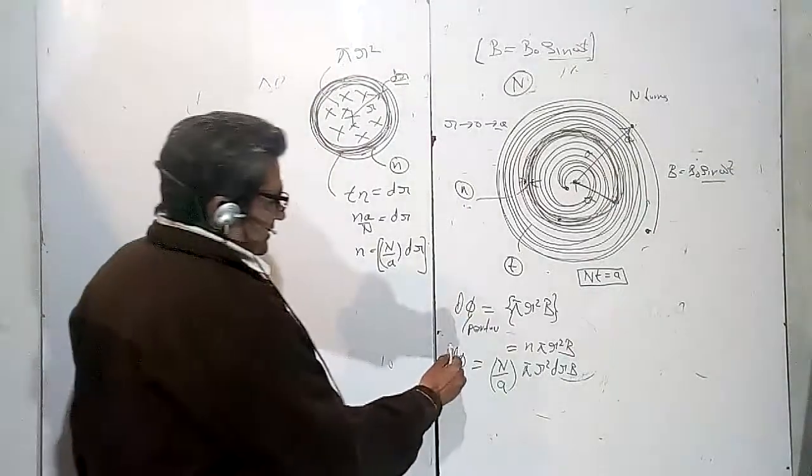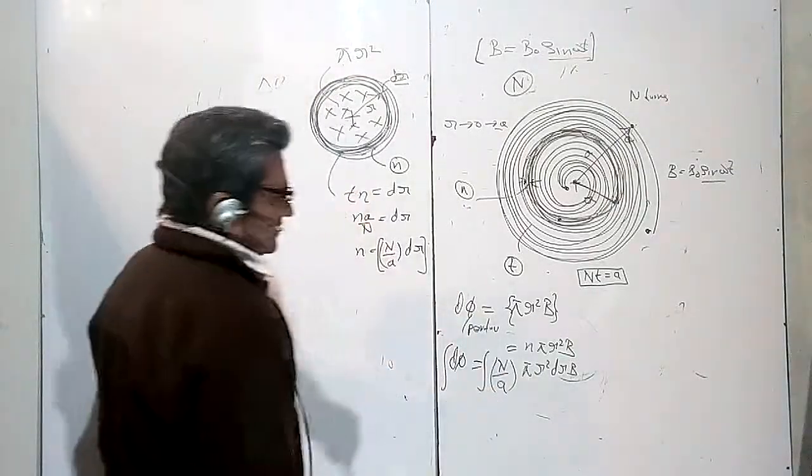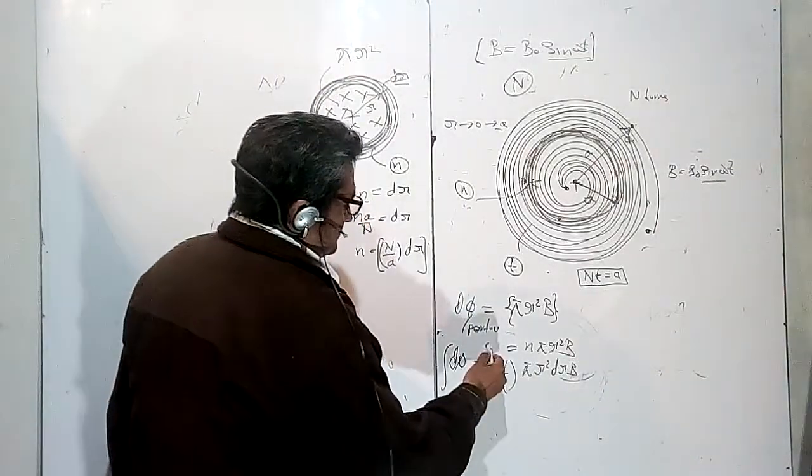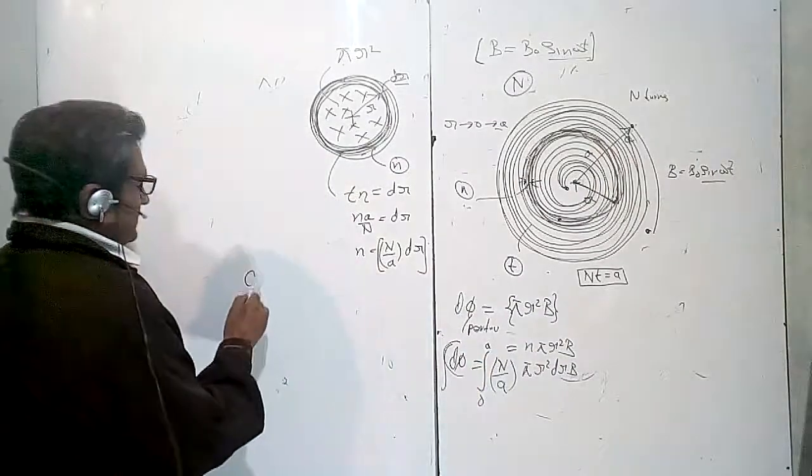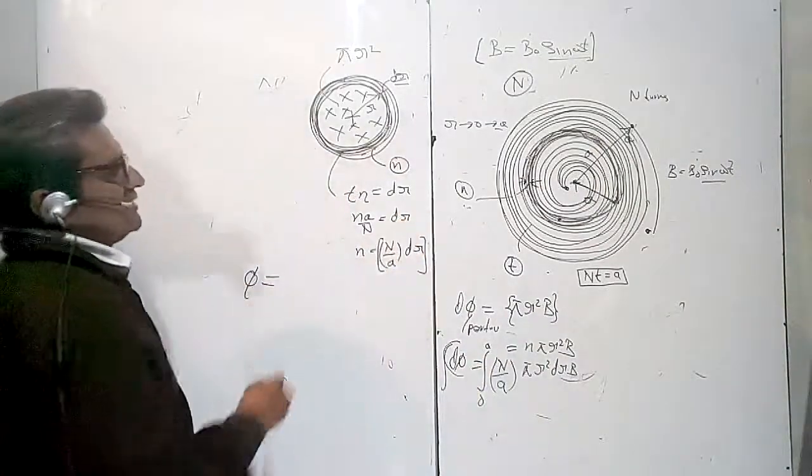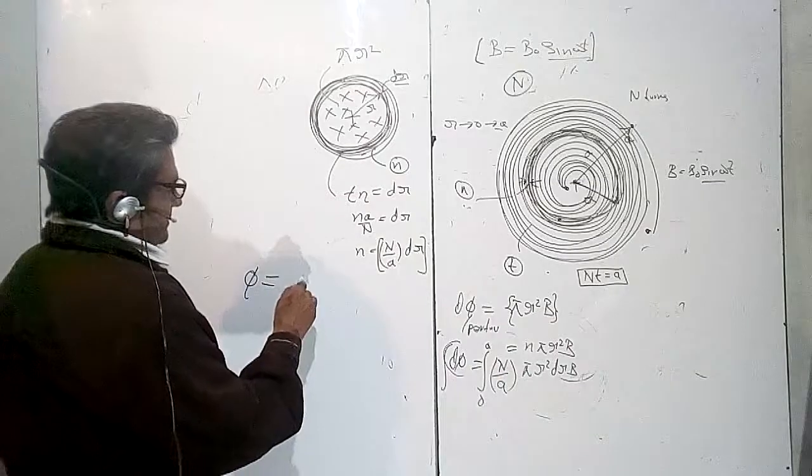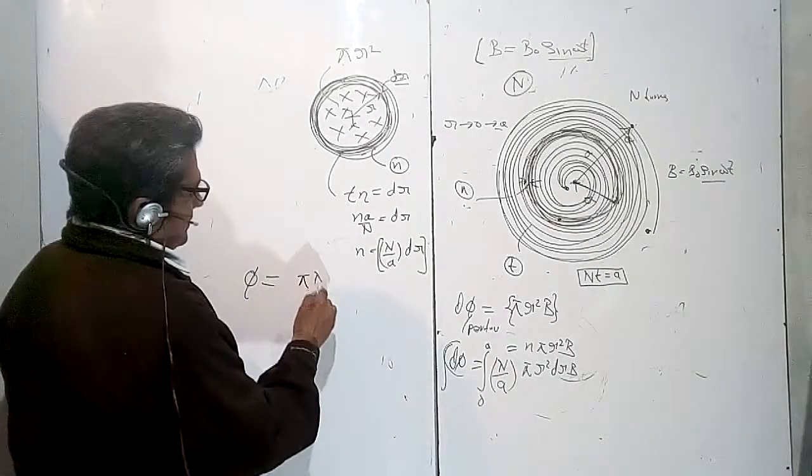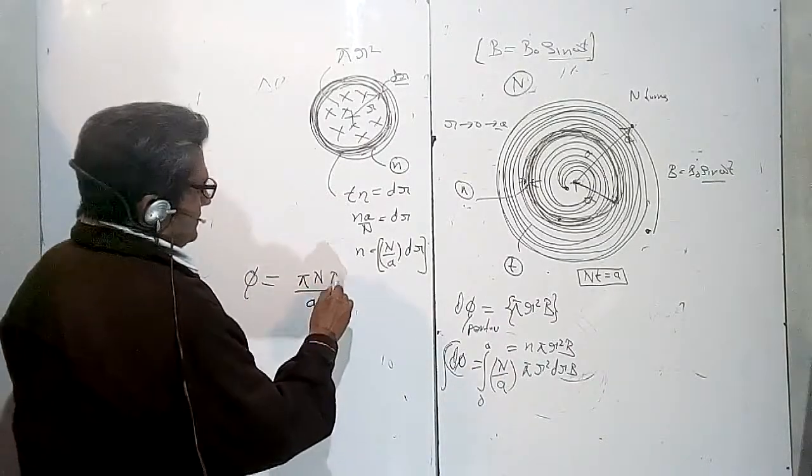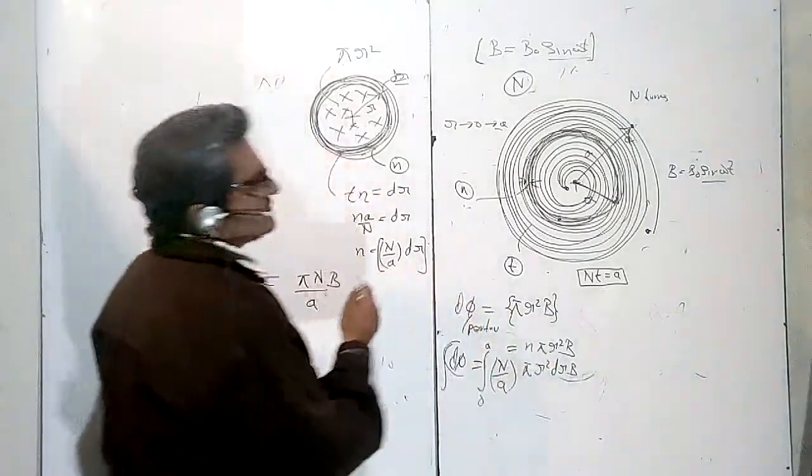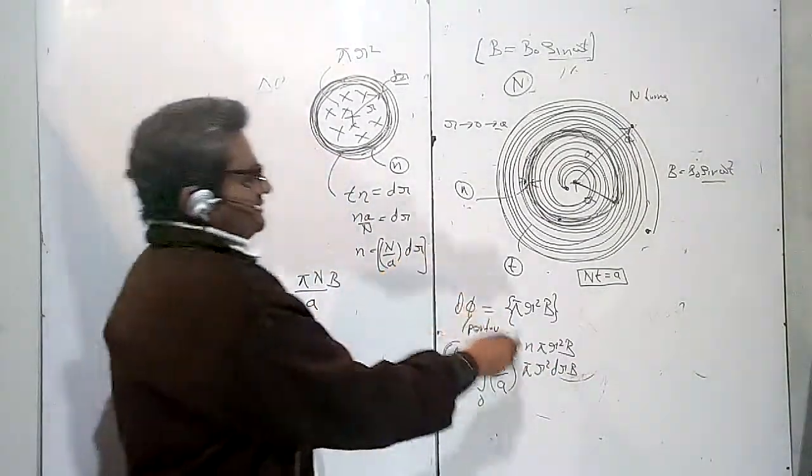To find the total flux, I will integrate from 0 to A. This will be my total flux through the coil.